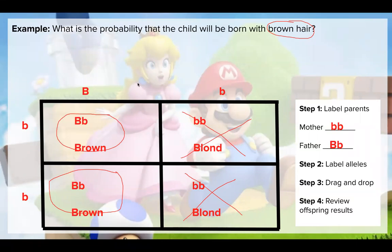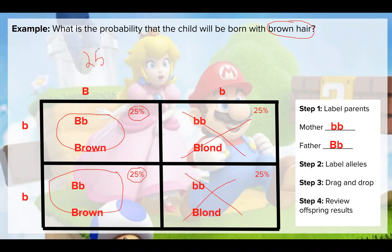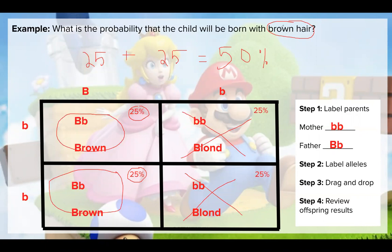To find the probability, remember that each box represents 25%. We just have to add the 25% from both brown hair boxes together. So 25% plus 25% equals 50%. That means there is a 50% chance that the offspring will be born with brown hair. Remember, this percent just means the chance or possibility that the offspring will have that specific genotype or phenotype.